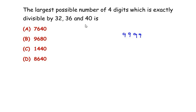Now we have to find out which is the largest possible four-digit number - it could be 9999 or it could be some other number - but that should be divisible by these three numbers: 32, 36, and 40. Obviously we can see that 9999 is not divisible by 40; it does not go into the table of four.